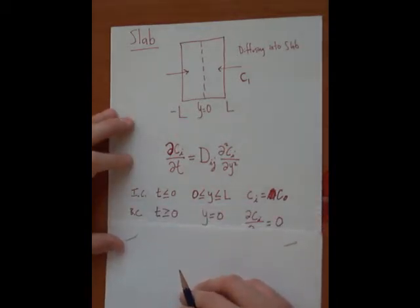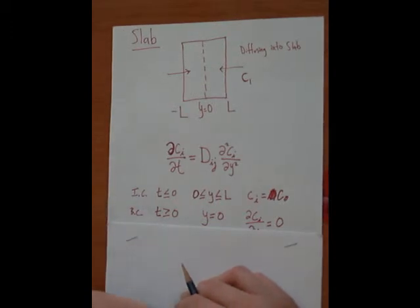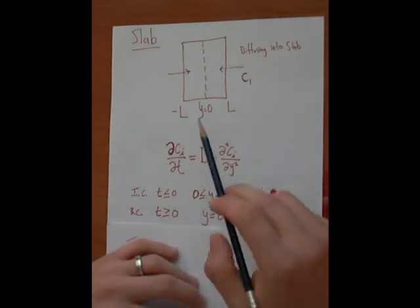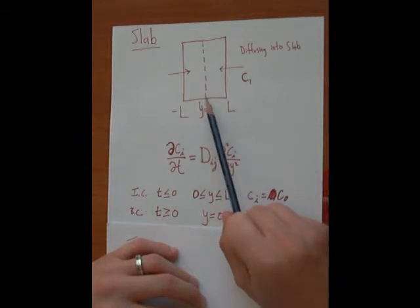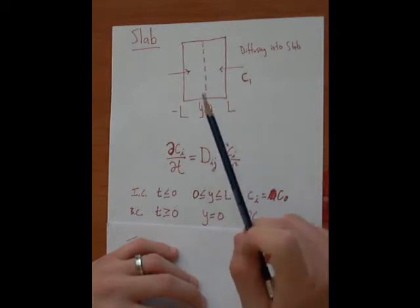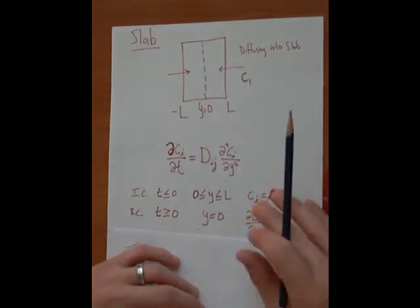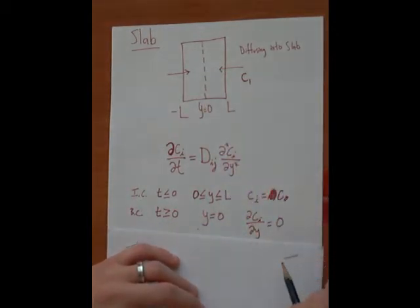So, one of the boundary conditions is that whenever time is greater than or equal to zero, one of the boundaries that we want to look at here that I've chosen is the center of the slab because we're really only concerned with the half thickness. So, at y equals zero, the concentration gradient is equal to zero.